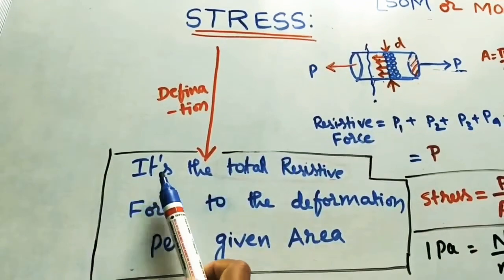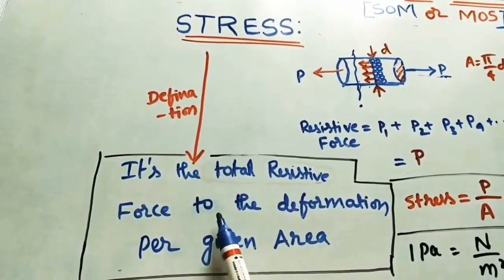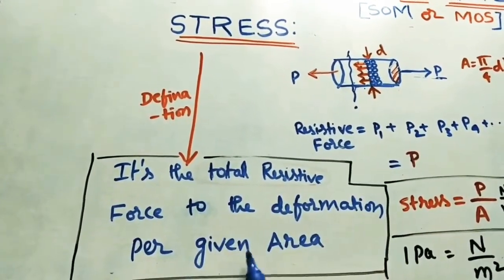So I have written the definition here. It is a total resistance force, or instead of total, it is a resistance force of the molecule to the deformation per given area.